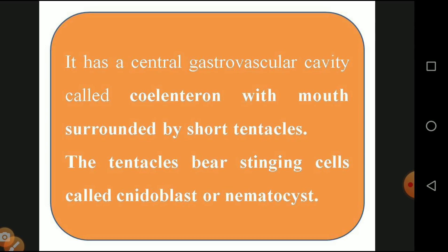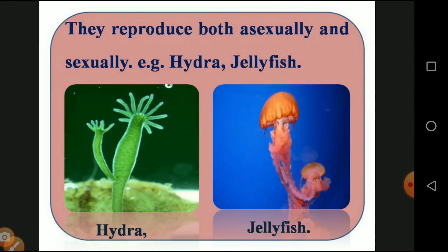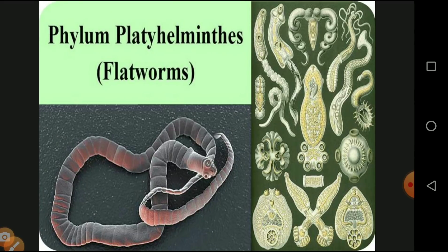The tentacles are finger-like projections available in the mouth region. The tentacles bear stinging cells called cnidoblasts or nematocytes. Many coelenterates exhibit polymorphism — variation in structure and function among individuals of the same species. 'Poly' means many, 'morphism' means in structure — so individuals of the same species can have different shapes and structures. Reproduction is both asexual and sexual. Examples are Hydra and jellyfish.